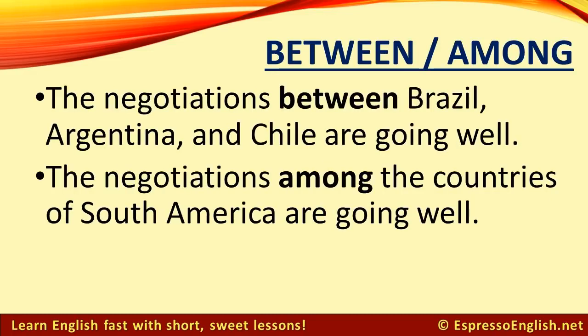Here's an example. The negotiations between Brazil, Argentina, and Chile are going well. The negotiations among the countries of South America are going well. You can see in the first example we use between with three items, but we name each of the three things individually. And in the second sentence, we use among because we refer to the countries as a group.